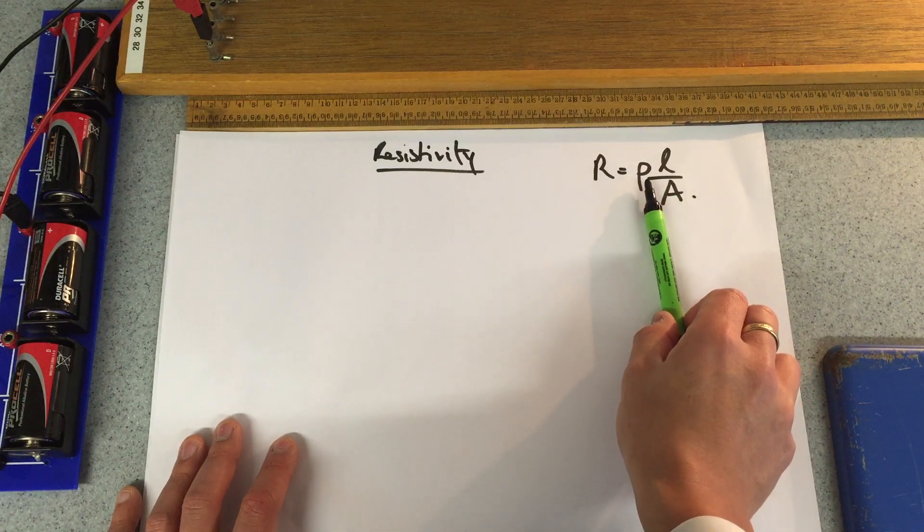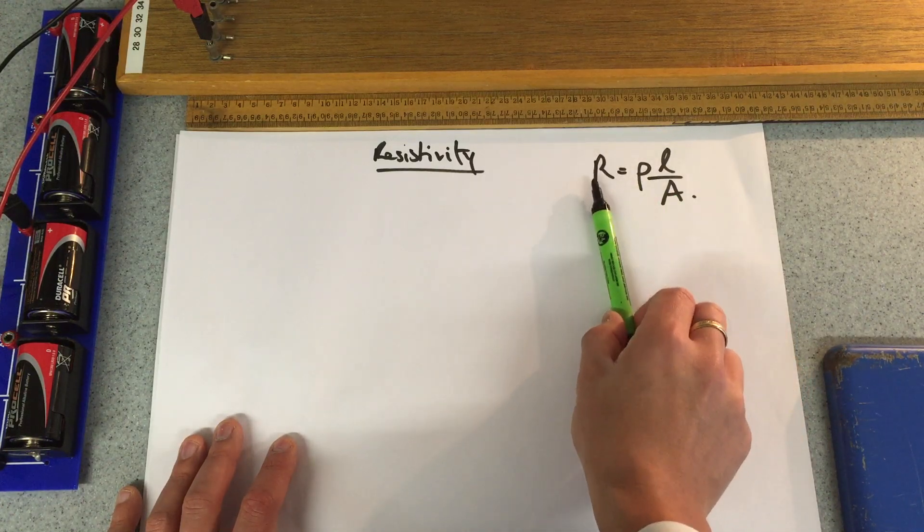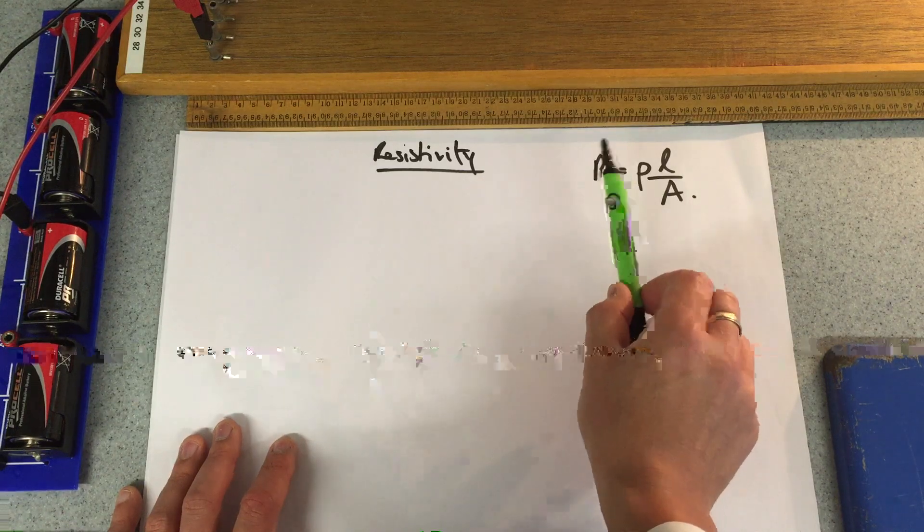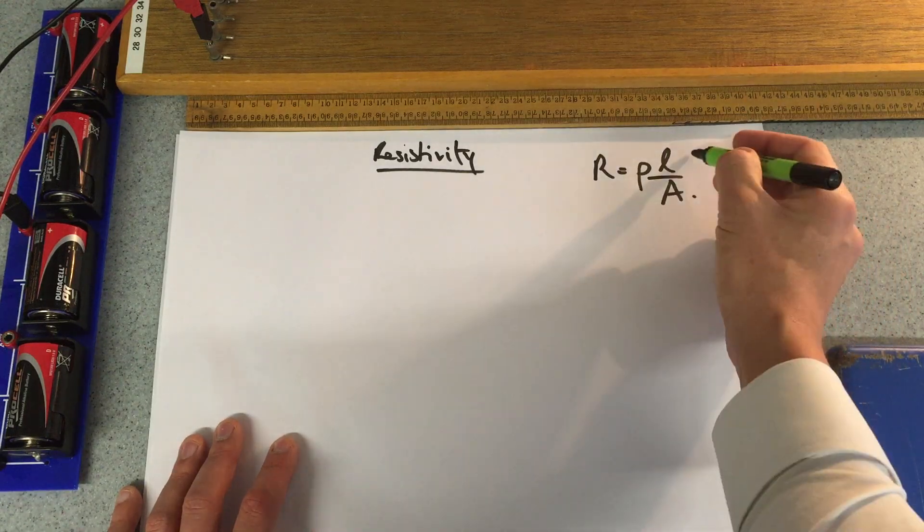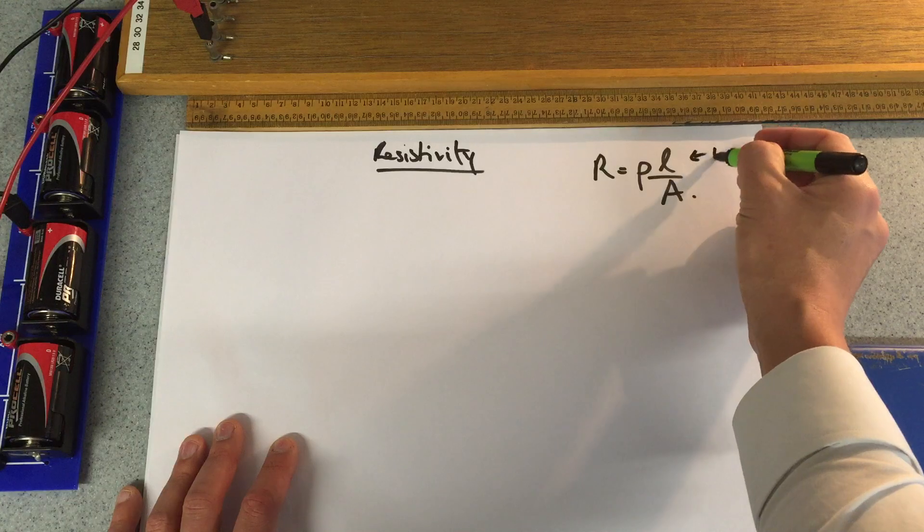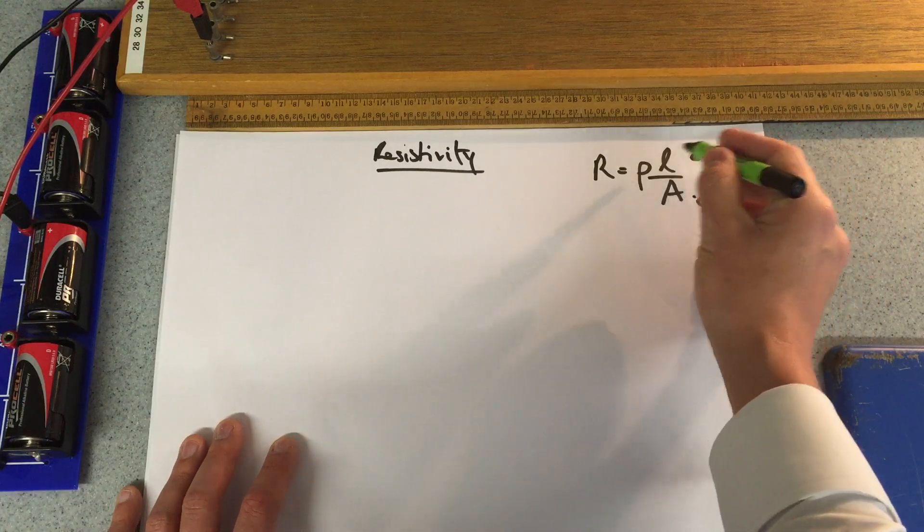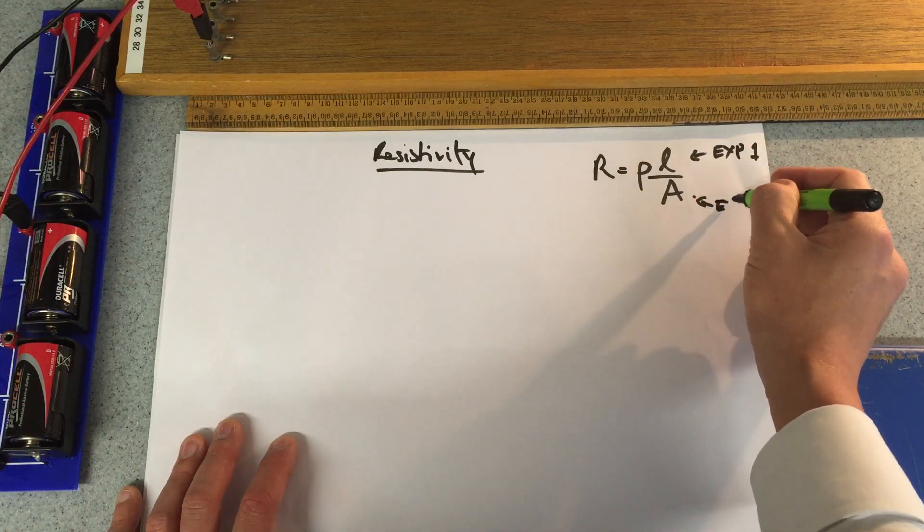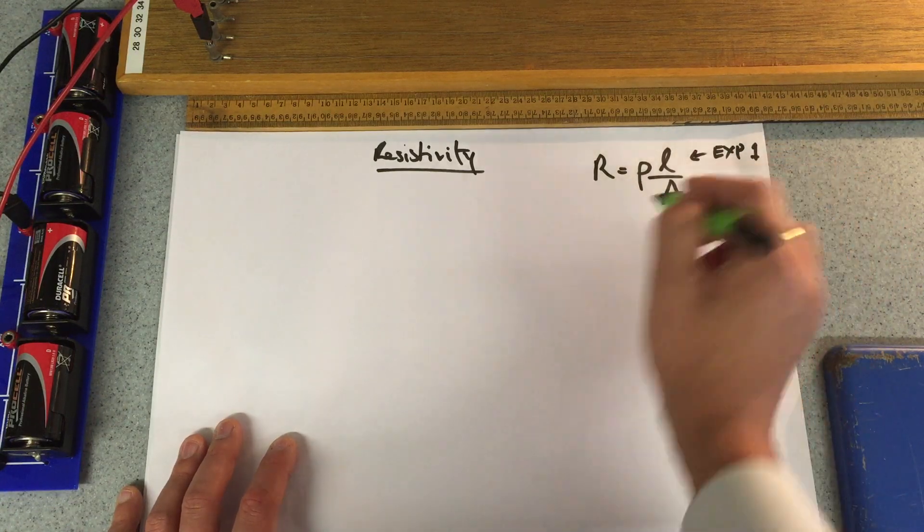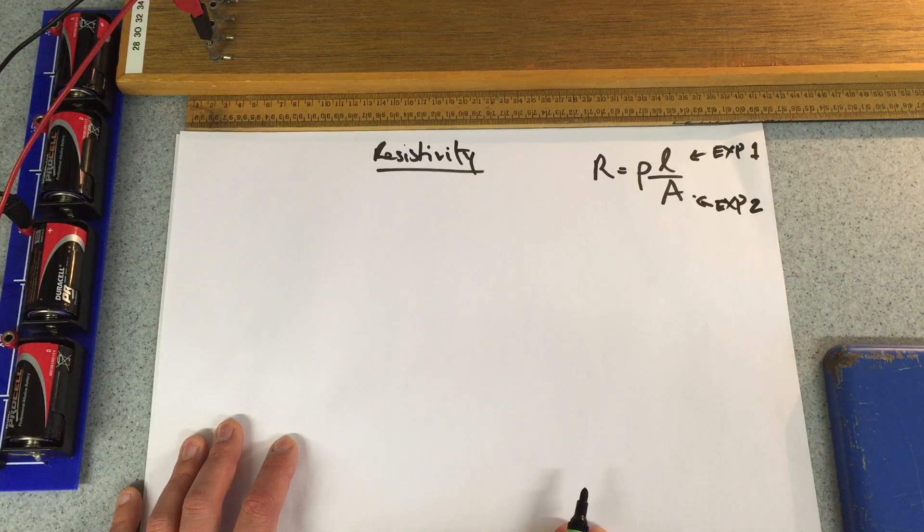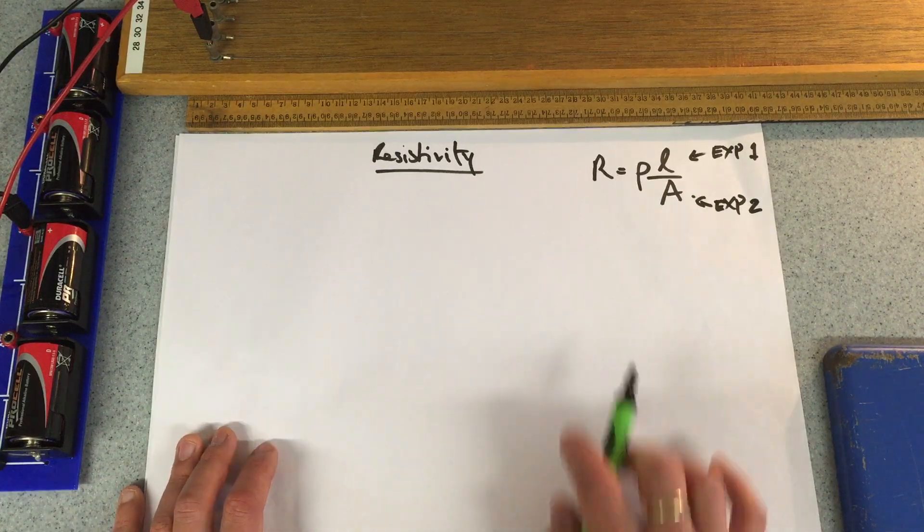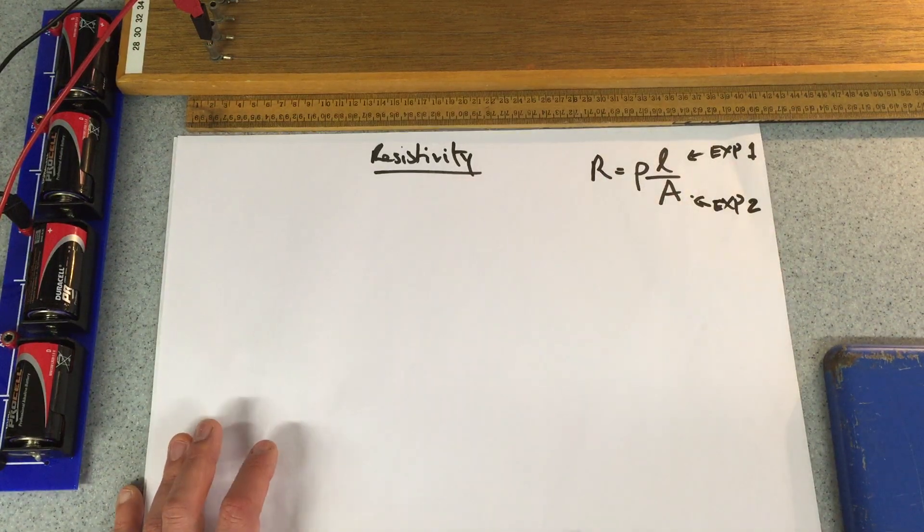So we're going to try and find this by working out in two ways really. Experiment one is going to look at how the resistance varies with the length, and experiment two is going to look at how the area changes the resistance, and then from those we'll work out the resistivity.